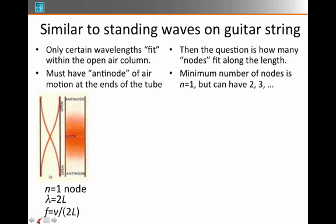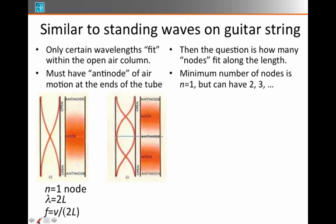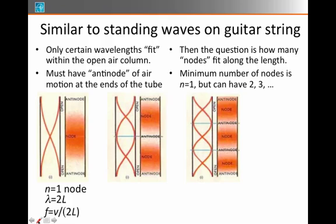Now the minimum number of nodes is 1, but you can also have 2, 3, and 4 nodes. If you think about what 2 would look like, that would have antinodes at the end of the pipe, but then it would have 2 nodes somewhere in between. Or we could have 3 nodes, where I'd draw 3 little intersections right there, 1, 2, 3, and again, antinodes at the end of the pipe.